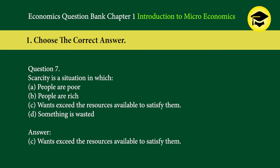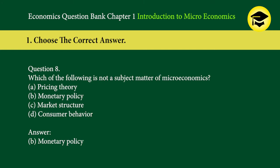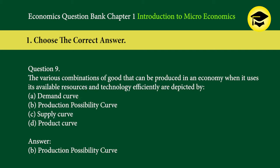Question 7: Scarcity is a situation in which — A. people are poor, B. people are rich, C. wants exceed the resources available to satisfy them, D. something is wasted. Answer: C. Wants exceed the resources available to satisfy them. Question 8: Which of the following is not a subject matter of microeconomics? A. Pricing theory, B. Monetary policy, C. Market structure, D. Consumer behavior. Answer: B. Monetary policy.